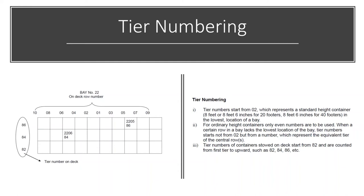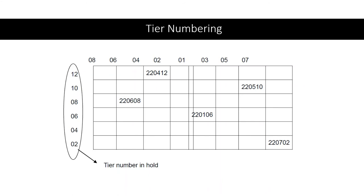Tier numbers normally start from the lowest position. A standard-height container is about 8 feet, or 8 feet 6 inches for some 40-foot containers. For ordinary-height containers, only even numbers are used. You can see that tier numbers start from 82, then go up to 84, 86, 88, 90, 92 — depending on how many containers are loaded in each tier. Under-deck containers use tiers numbered 2, 4, 6, 8, 10, 12, while on-deck containers use 82, 84, 86, 88.